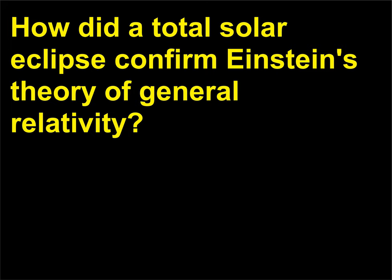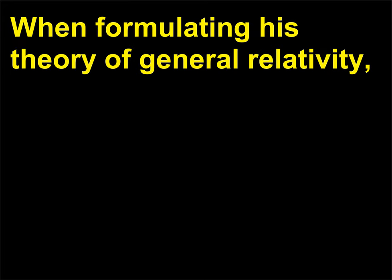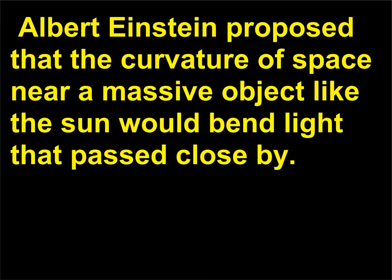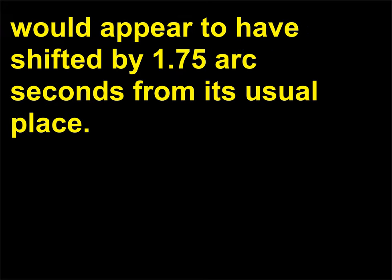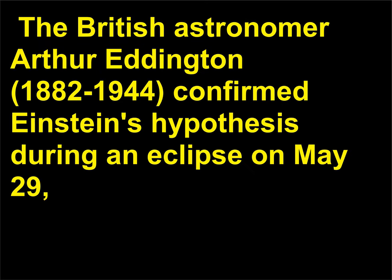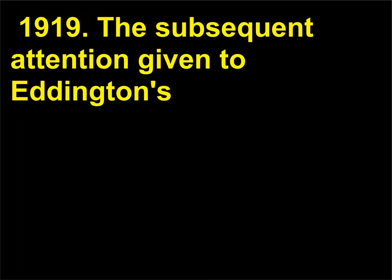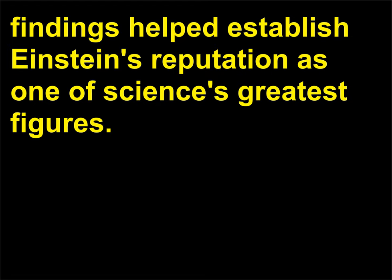How did a total solar eclipse confirm Einstein's theory of general relativity? When formulating his theory of general relativity, Albert Einstein proposed that the curvature of space near a massive object like the sun would bend light that passed close by. For example, a star seen near the edge of the sun during an eclipse would appear to have shifted by 1.75 arc seconds from its usual place. The British astronomer Arthur Eddington (1882–1944) confirmed Einstein's hypothesis during an eclipse on May 29, 1919. The subsequent attention given to Eddington's findings helped establish Einstein's reputation as one of science's greatest figures.